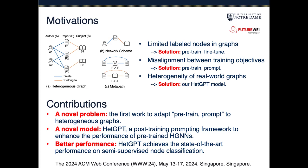Inspired by recent progress in prompt-based learning from natural language processing, many works have adapted the pre-train prompt framework to homogeneous graph neural networks. However, in the real world, graphs are all heterogeneous. Therefore, we propose our HGPT model.